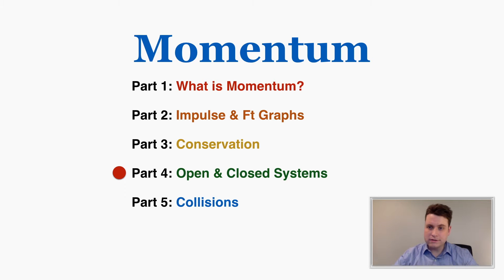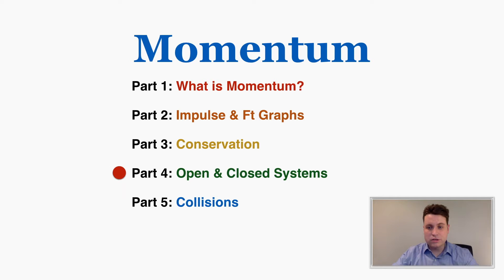During the last video in this series on momentum where I talked about conservation, you may have been thinking that there are very clear examples of when momentum is very clearly not conserved. I was giving examples of cars bumping into each other and bouncing off, but there are examples where it seems like one object begins to move in an interaction and the other one doesn't change its velocity at all.